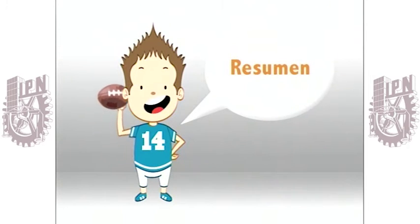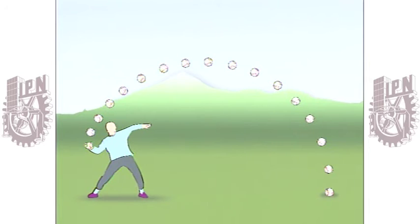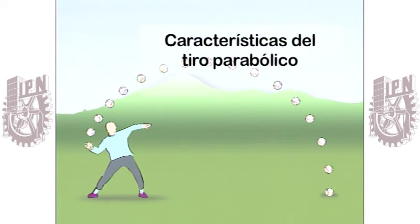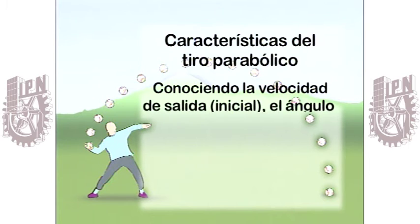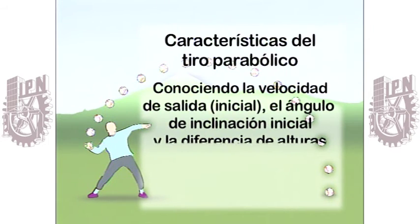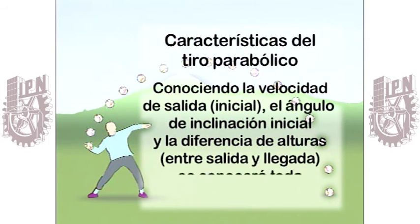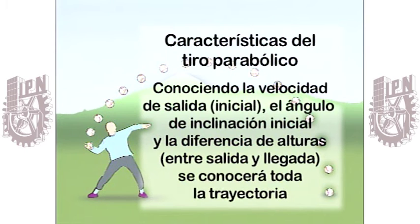Hagamos un resumen de lo aprendido. El tiro parabólico tiene las siguientes características. Conociendo la velocidad de salida inicial, el ángulo de inclinación inicial, y la diferencia de alturas entre salida y llegada, se conocerá toda la trayectoria.